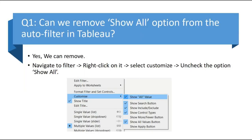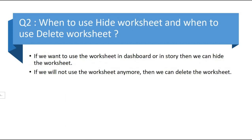The first question is: can we remove the 'Show All' option from filters in Tableau? Yes, we can. To remove it, right-click on the filter, select 'Customize', and uncheck the 'Show All' option. As you can see in the screenshot as well.